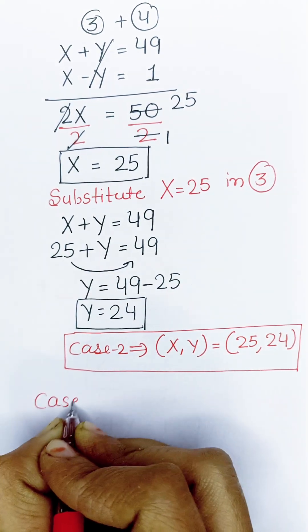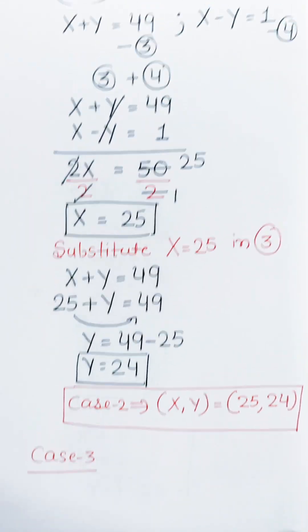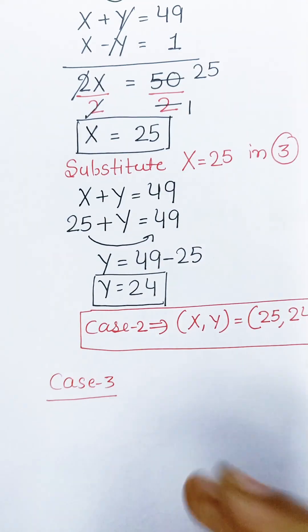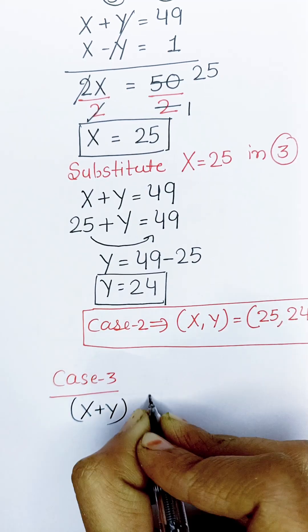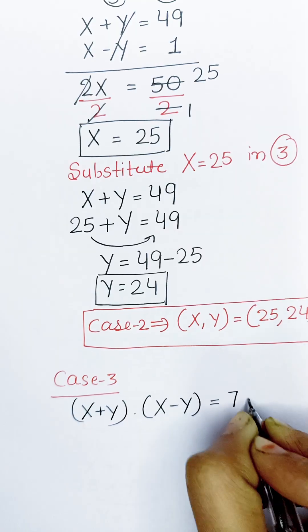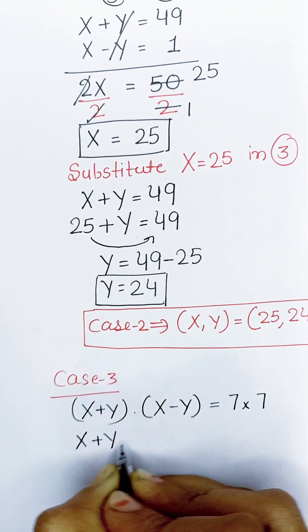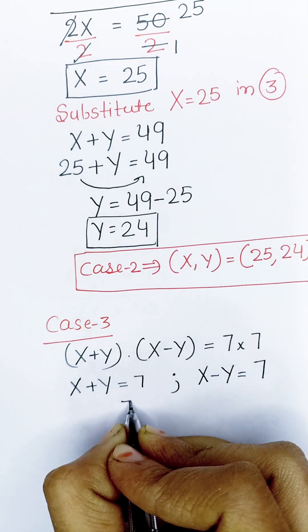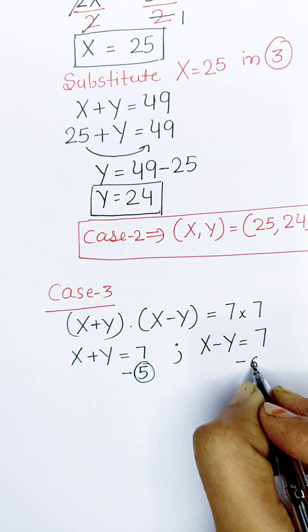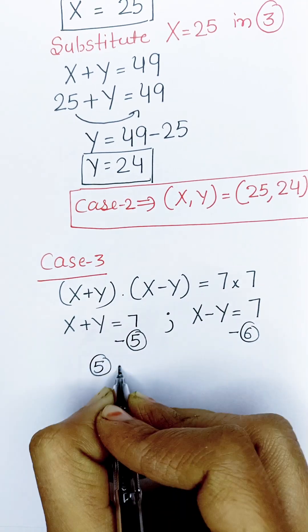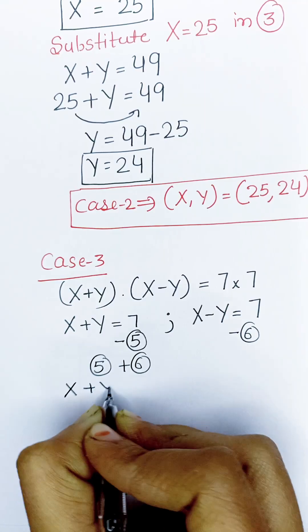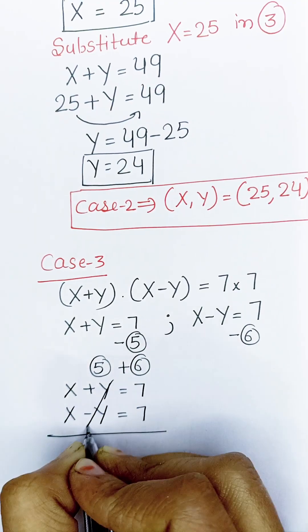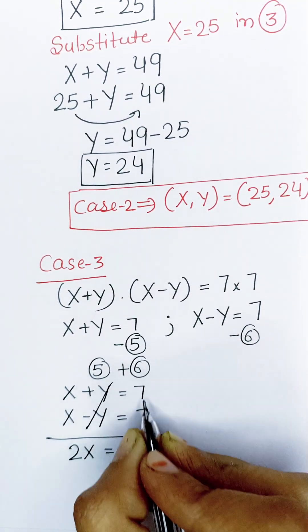Now we will solve Case 3. Case 3 is 7 into 7. So for this case, x plus y equals 7 — call this equation 5 — and x minus y equals 7 — call this equation 6. Adding equations 5 and 6: the y's cancel out, and x plus x gives 2x, which equals 7 plus 7, that is 14.